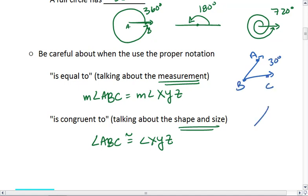and let's say it was 30 degrees. And I had angle X, Y, Z, also 30 degrees. Because they're both 30 degrees, then their measures are the same. But then they also have the same shape and size, so they are congruent.